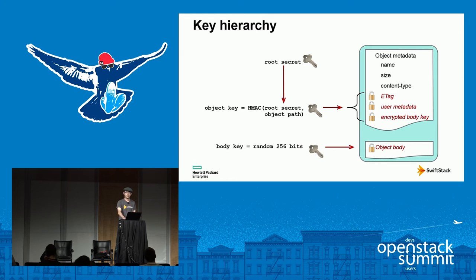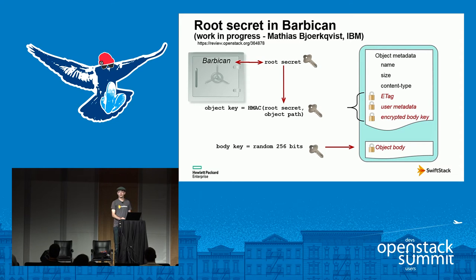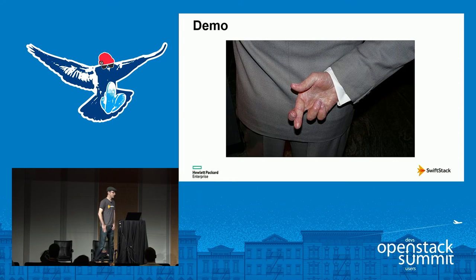When encrypting the data, we want to use a unique key for every object. However, storing all these keys in an external service would be unscalable. Instead, we use a root secret for the entire cluster and from that derive keys for every object. This key is used directly to encrypt the e-tag and user metadata, while we generate a separate random 256-bit key for the object data, which we then encrypt and store as additional metadata. This allows future re-keying without needing to re-encrypt the entire object body. In this initial implementation, the root secret is stored in config files on each proxy server, but there is work in progress by Matthias at IBM to integrate with Barbican, the OpenStack key management service.